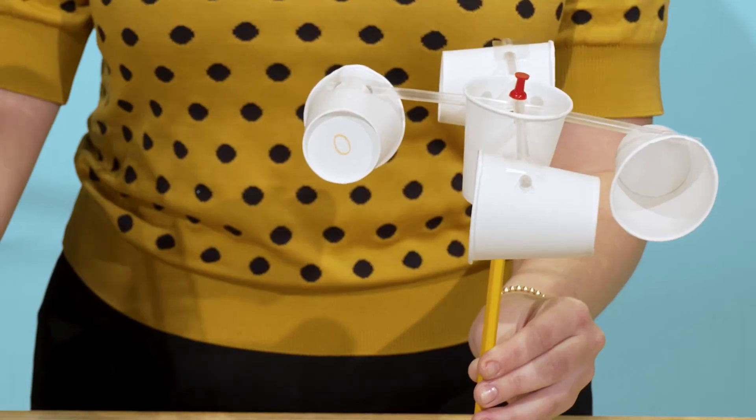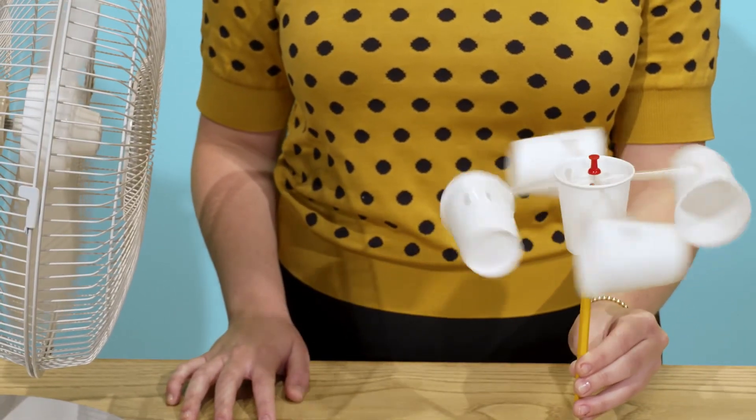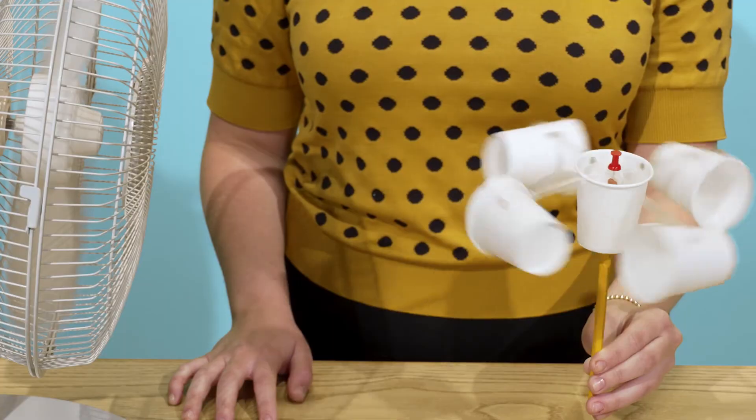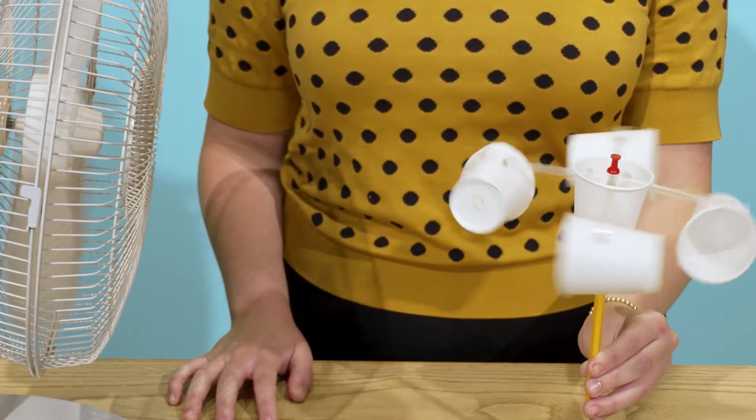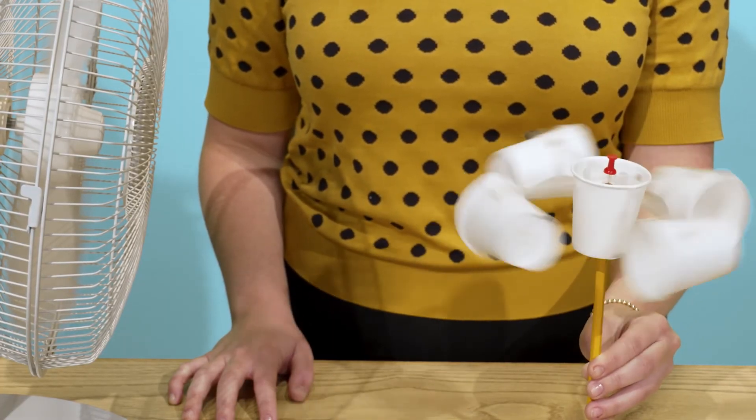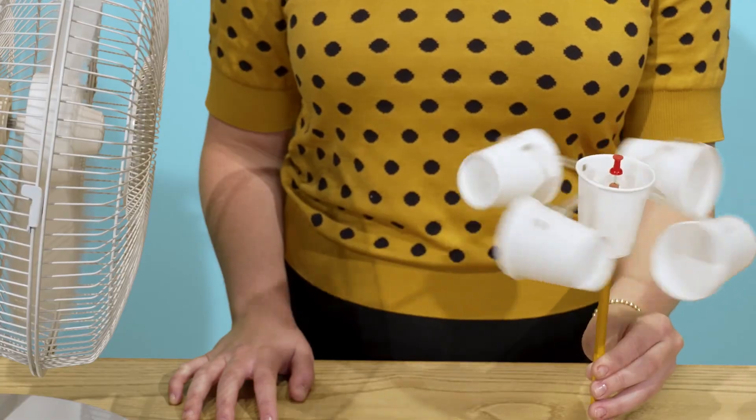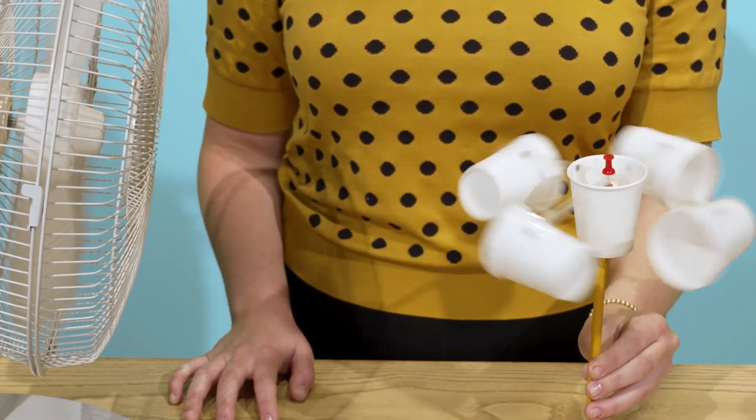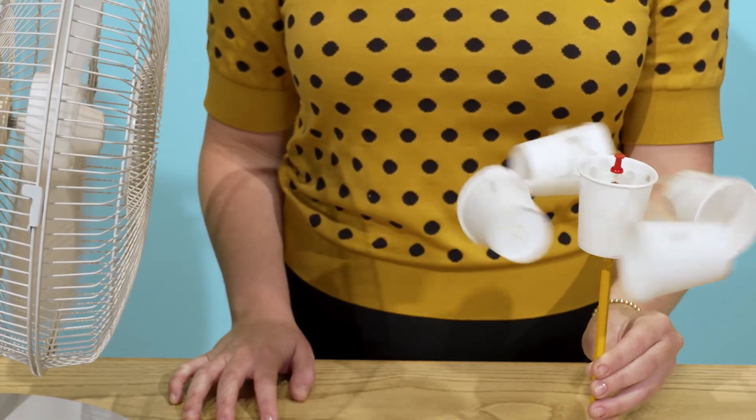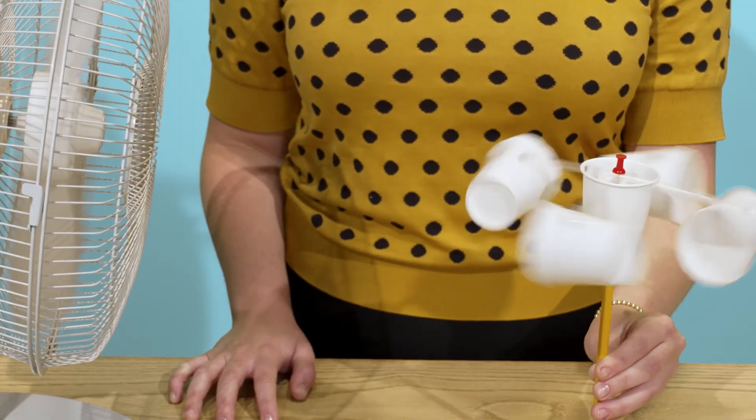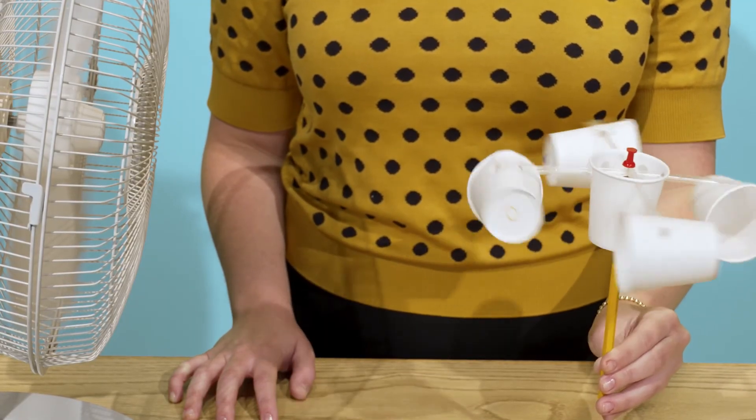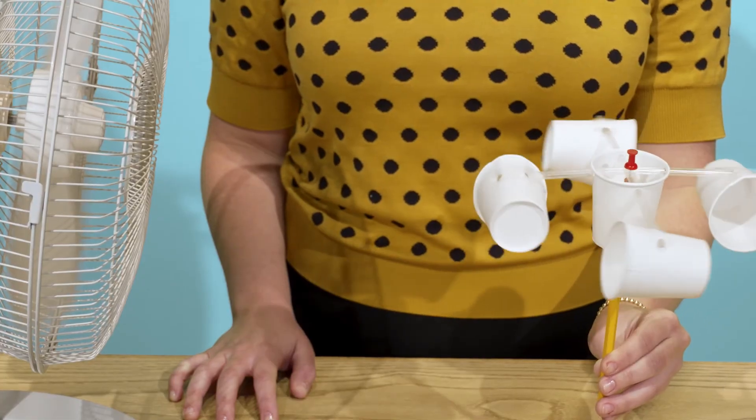Remember the drawing you made on one of the cups? You're going to count how many times you see it go by as the anemometer spins. Set a timer to 15 seconds and count the rotations the anemometer makes. To get the number of rotations per minute, multiply the number by four. Refer to the additional documents for experiment ideas and ways to collect and display data.